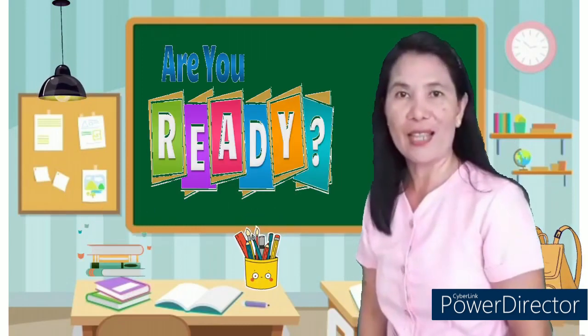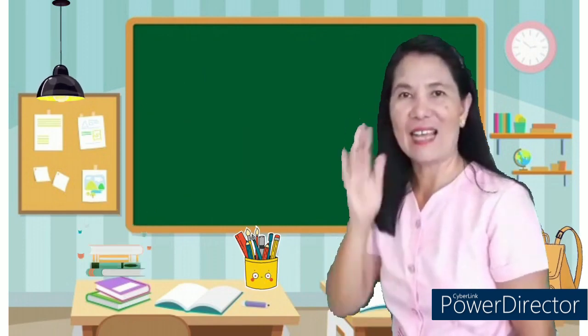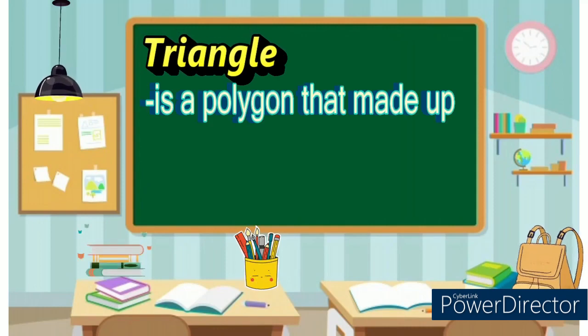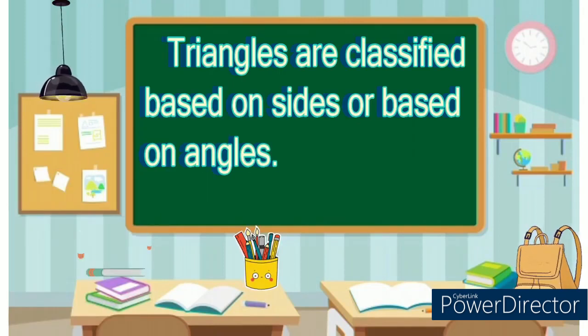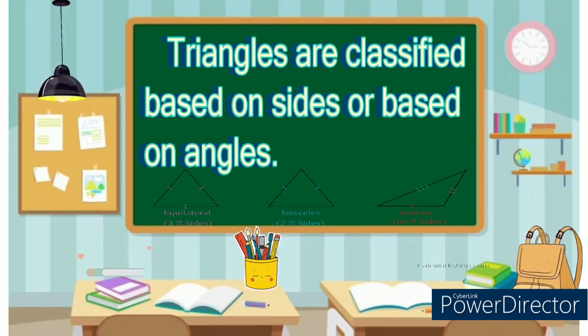Are you ready now for our new lesson? Class, listen and learn! A triangle is a polygon that's made up of three line segments. It has three sides and three angles. Triangles are classified based on sides or based on angles.